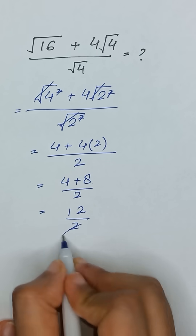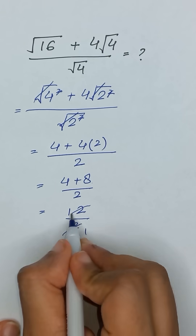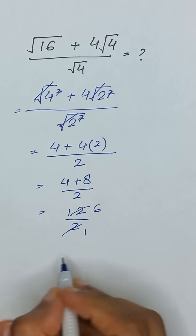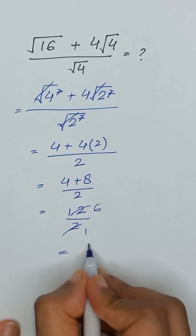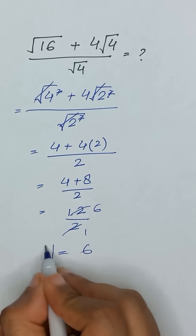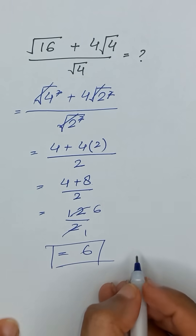So, 2 times 6 equals 12. So its answer is 6. Thanks for watching. Bye-bye.